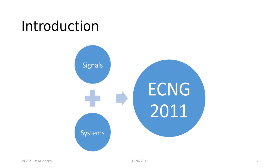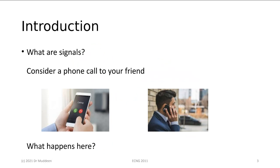As the course name says, it's Signals and Systems. There are two parts that comprise ECNG 2011: a signal component and a systems component. The first thing to get clarification on is: what are signals? Perhaps the best way — considering how we are communicating right now — might be to consider you calling someone, or even how you joined this session, and what actually happened.